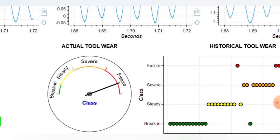The actual tool wear will be classified according to the scale: breaking, steady, severe, and failure. So the tool will be broken when there is a severe failure.